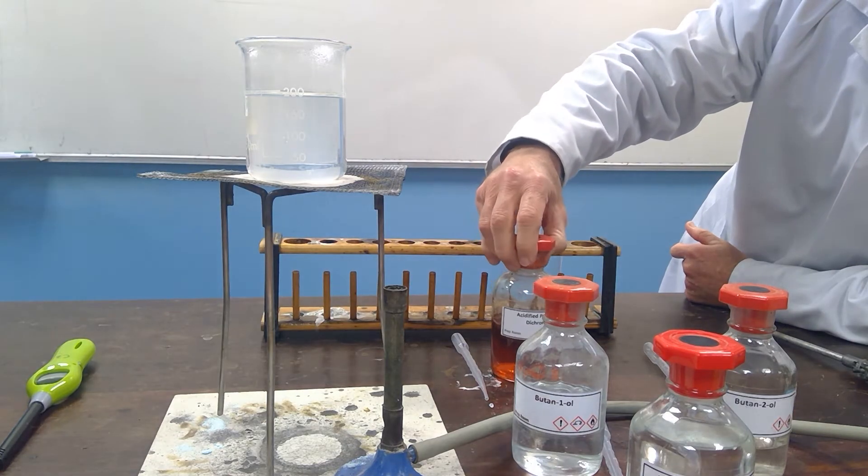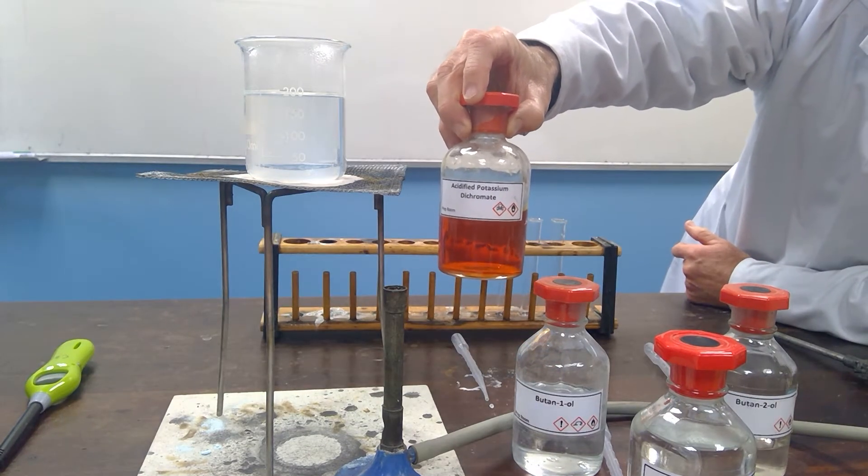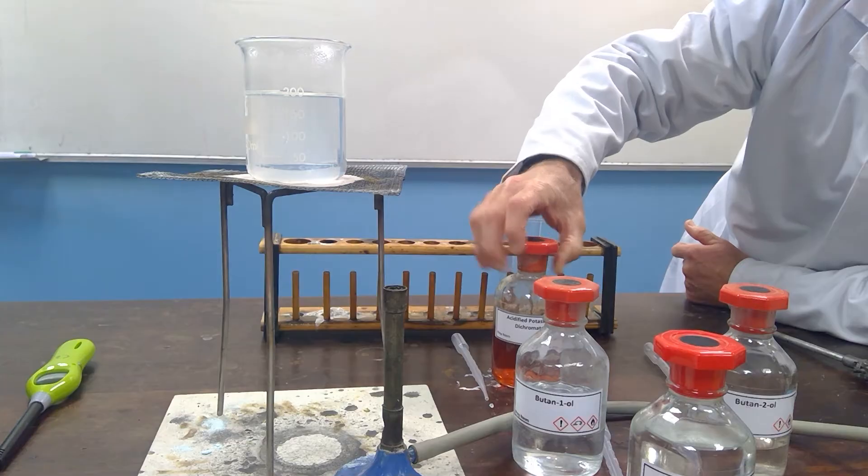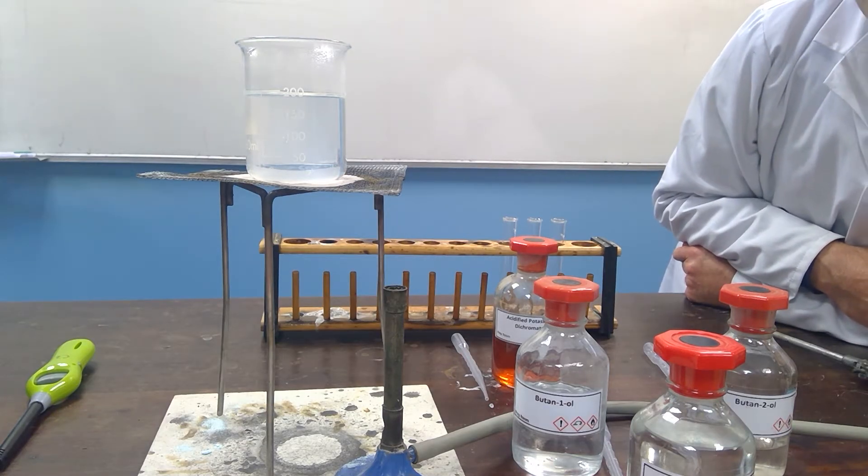We're going to mix them together with acidified potassium dichromate. This is an oxidizing agent and if there is oxidation it will turn from orange to green.